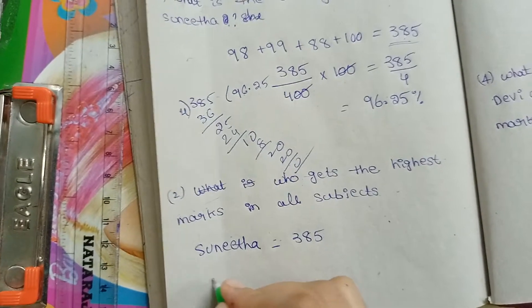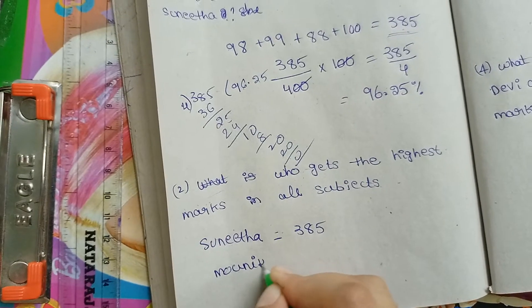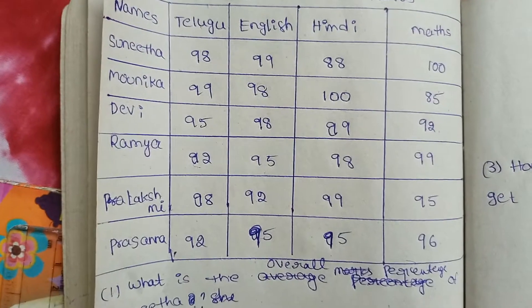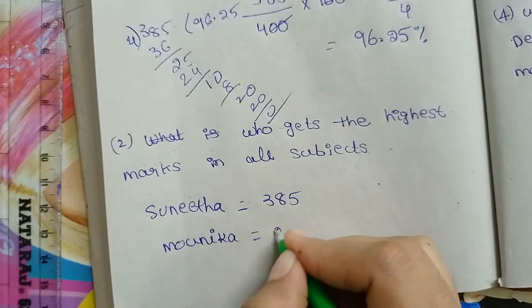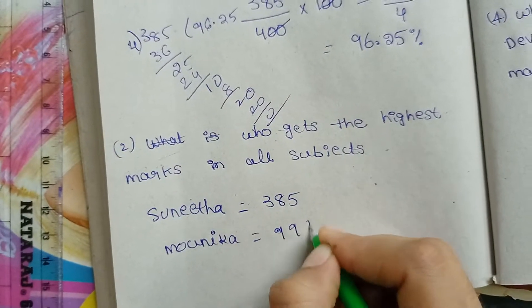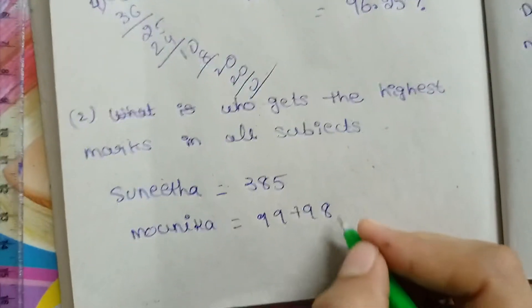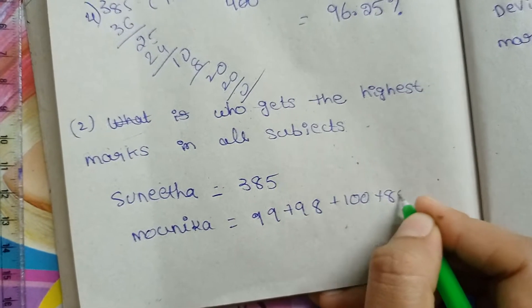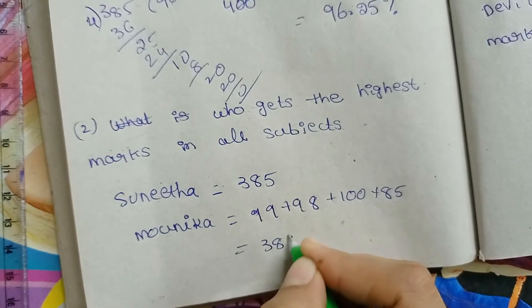Next, Monica. Monica's marks are 99 plus 98 plus 100 plus 85, which gives a total of 382.